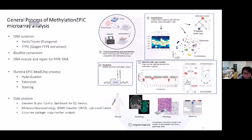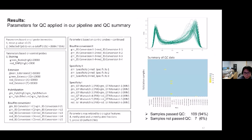Methylation profiling should be interpreted in conjunction with all available clinical data, including history, imaging, histology, and other supplementary molecular testing. Looking at our samples, we examined the QC parameters applied in our pipeline. There are parameters for overall performance and for each step in the process. We tested 116 samples, including 106 tumor specimens and 10 normal control samples.